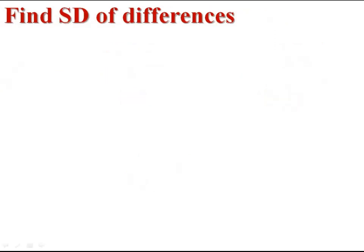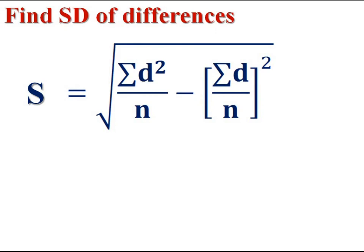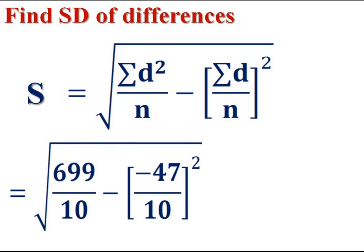Then find standard deviation of differences. Standard deviation is equal to square root of sigma D square by N minus sigma D by N all square. That is, square root of 699 divided by 10 minus -47 divided by 10 all square. Now we get standard deviation 6.91. It is the standard deviation of differences.